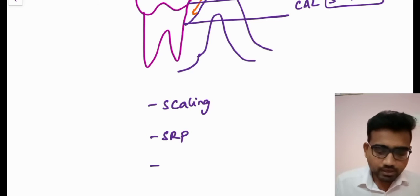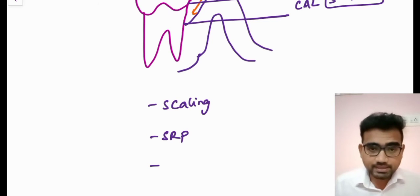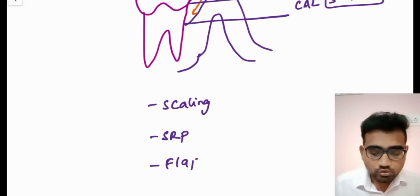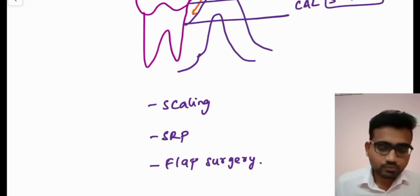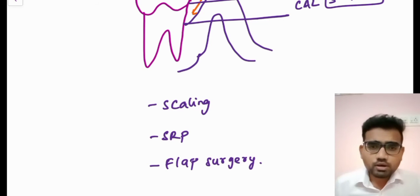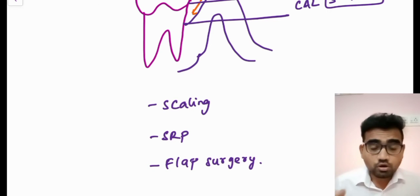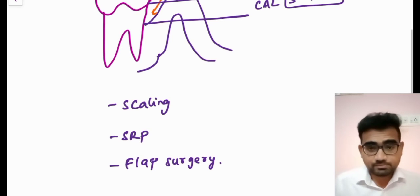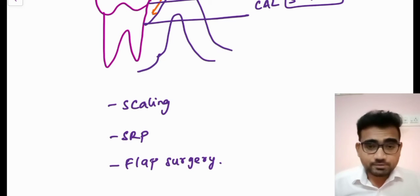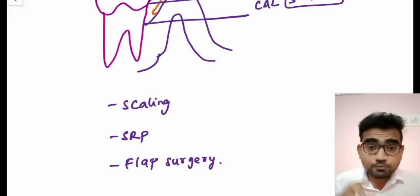You are going to do scaling and root planing, and if needed, you are going to do flap surgery. Now, what determines whether you should do scaling alone, scaling and root planing, or flap surgery? That is what we call the critical probing depth.